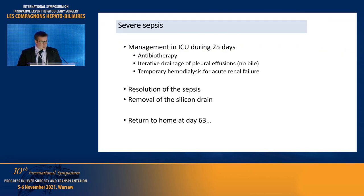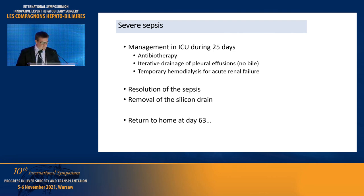The patient developed severe sepsis requiring management in the intensive care unit for more than three weeks, with multiple lines of antibiotic therapy, iterative drainage of pleural effusions without sign of bile leakage at every drainage, and temporary hemodialysis for acute renal failure. When finally the sepsis disappeared, the drain was removed and the patient was discharged more than two months after the right hepatectomy.